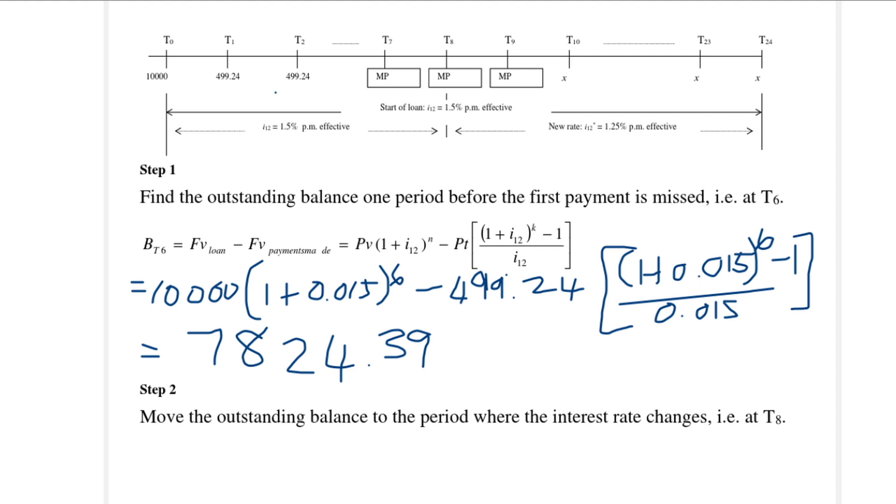So that's the outstanding balance at T6 and now we want to move that outstanding balance from T6 to T8. So we move it two time periods. That is the balance now at T8.